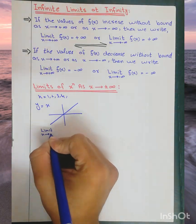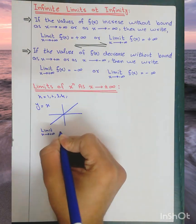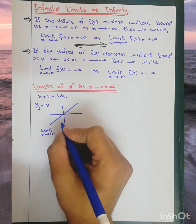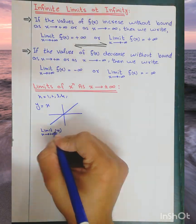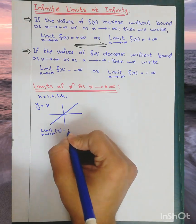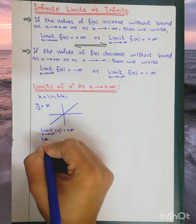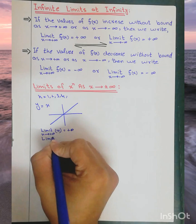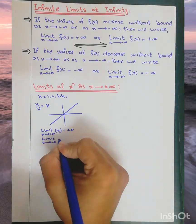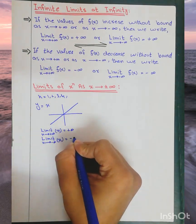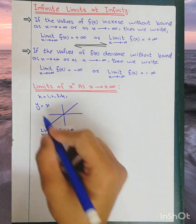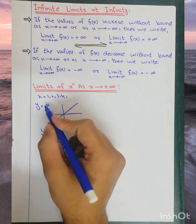As x approaches positive infinity and we apply that to f(x), the limit of f(x) equals positive infinity. When x approaches negative infinity and we apply that to f(x), then f(x) equals negative infinity. That case is for n equals 1.